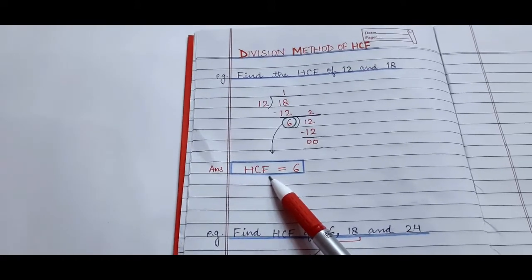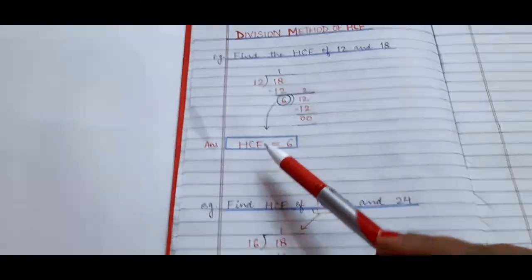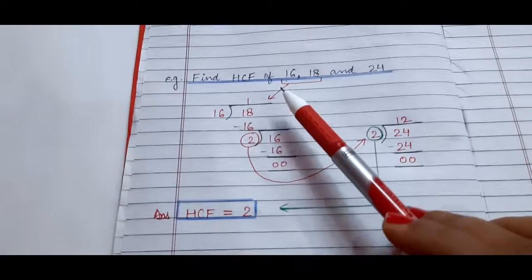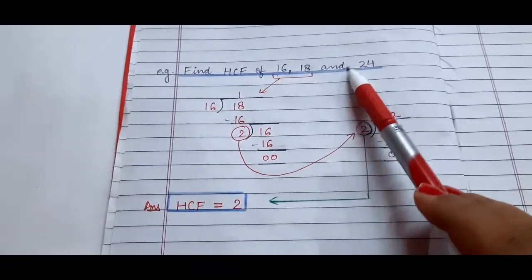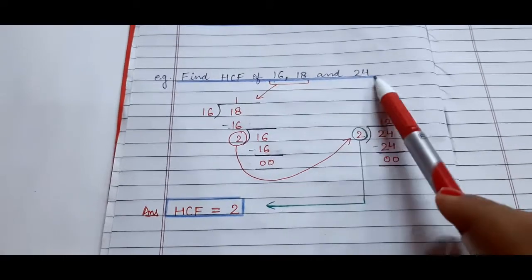Now we will take another example. Find the HCF of 16, 18, and 24. Here we have three numbers.